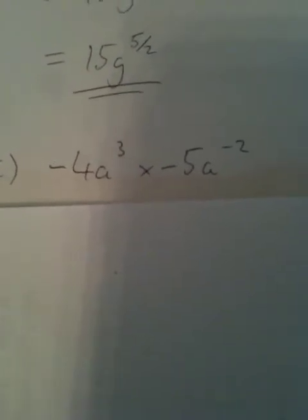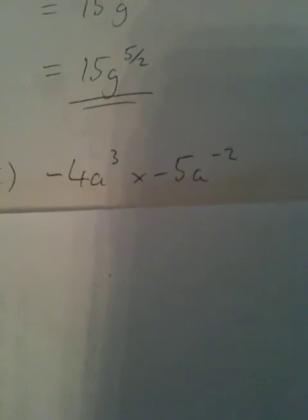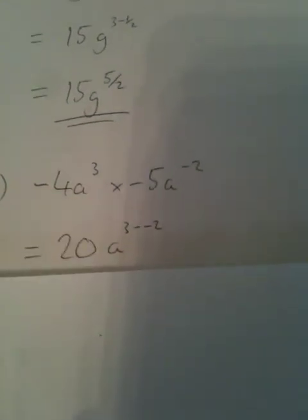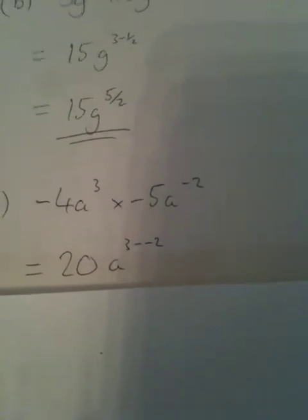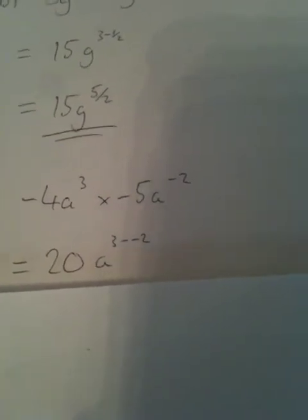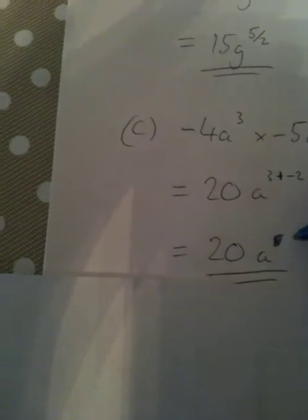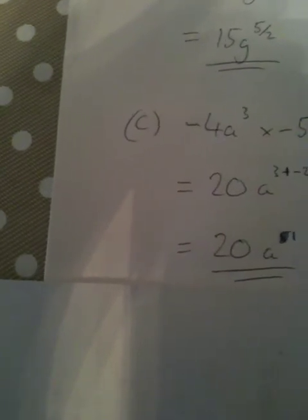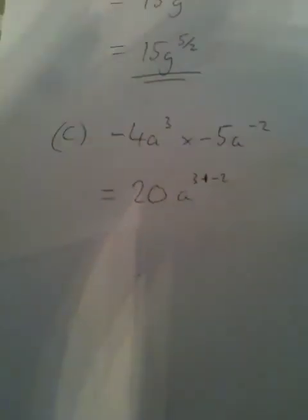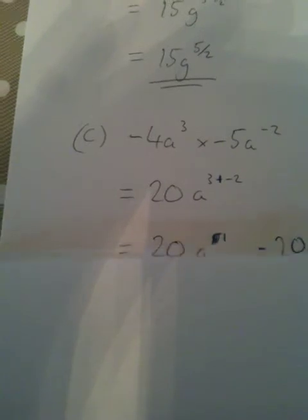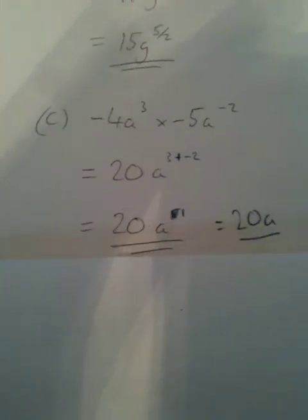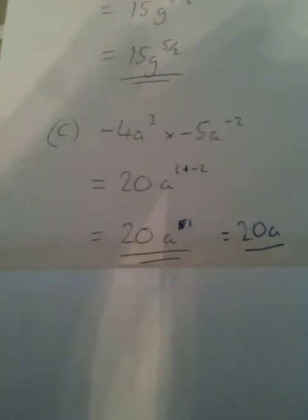Part C: negative 4a³ times negative 5a⁻². Again, large numbers first — negative 4 times negative 5 is 20. For a³ times a⁻², we add the powers: 3 plus minus 2 is just 3 subtract 2, which gives a to the power 1. And anything to the power 1 is just itself, so the answer is 20a.